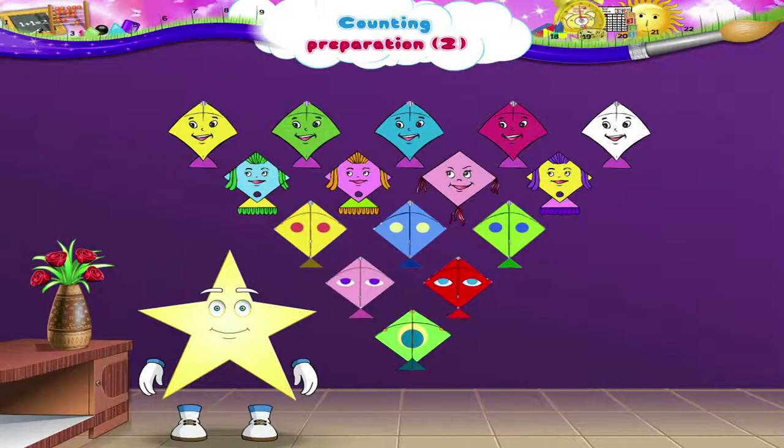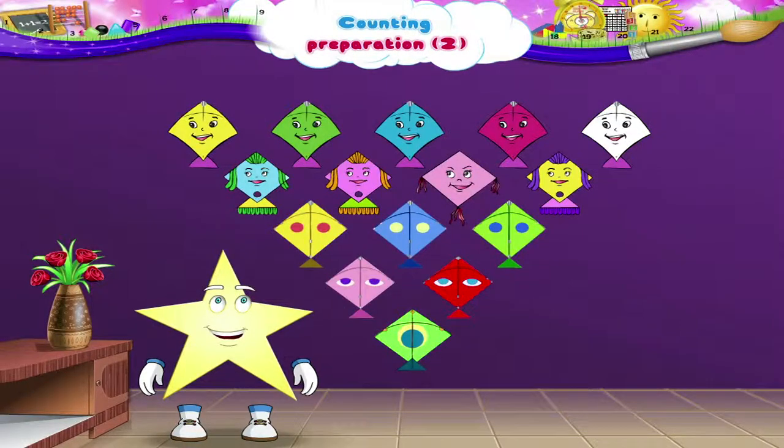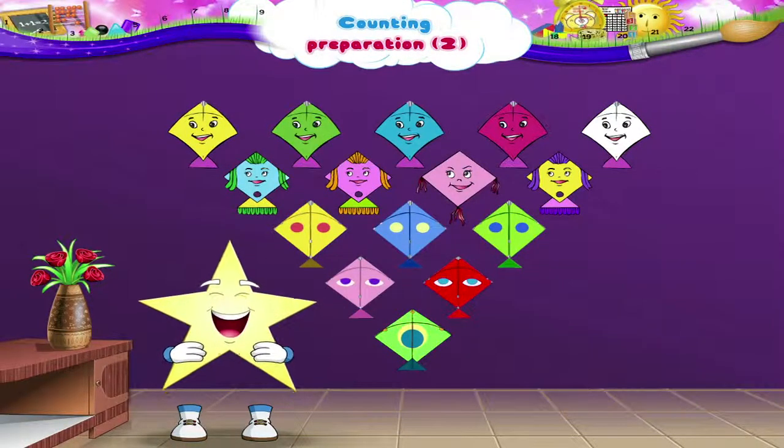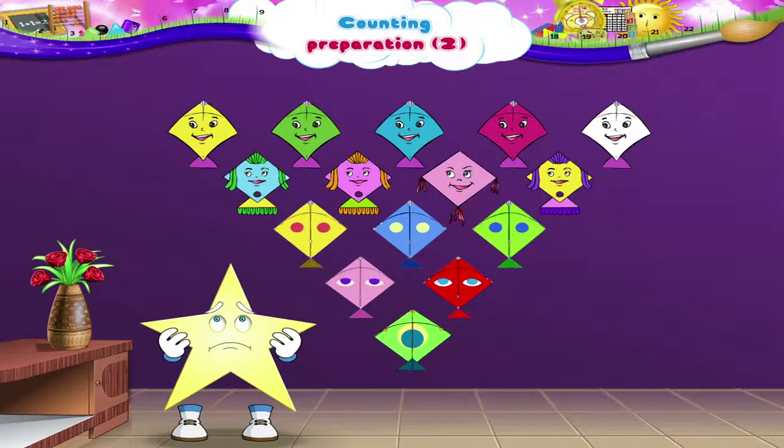Starry, look at these kites hung on the wall. Let us count them. What's the matter, Starry? Why are you making a sad face? Starry, don't you know how to count? Oh, I see. Don't worry, Starry.